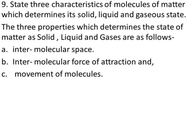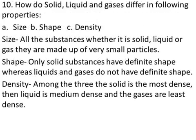Number ten: How do solid, liquid, and gases differ in the following properties - size, shape, and density? Size: All these substances, whether solid, liquid, or gas, are made up of very small particles. Shape: Only solid substances have definite shape, whereas liquids and gases do not have definite shape. They take the shape of the vessels in which we keep them.